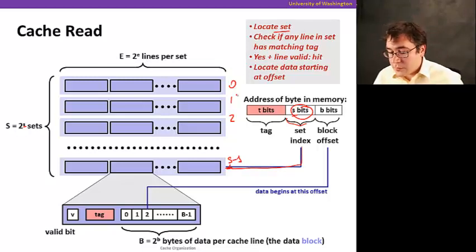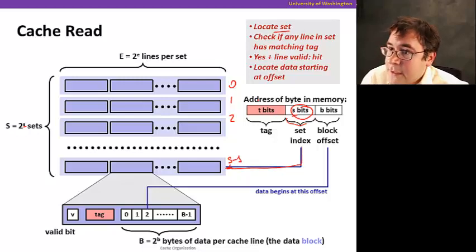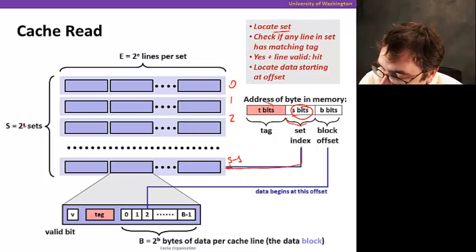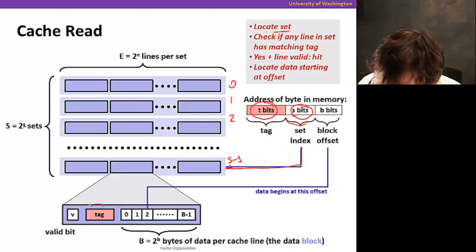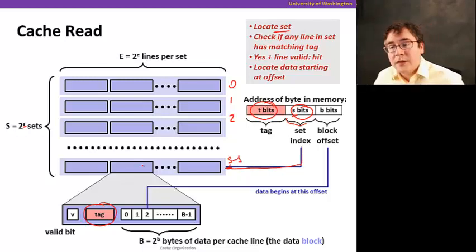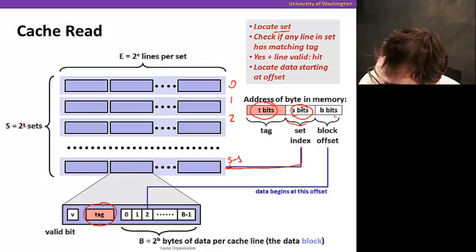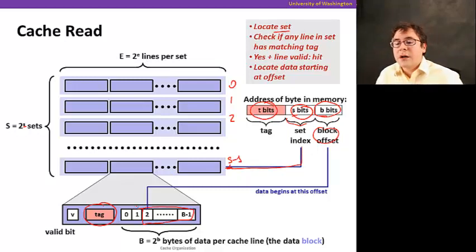Once we do that, what we're going to do is, we're going to see whether the tag of the address is T bits, the upper part of the address matches the tag stored in the block. And then we're going to use the lower part of the address, the block offset, to determine which part of the block we are going to read.